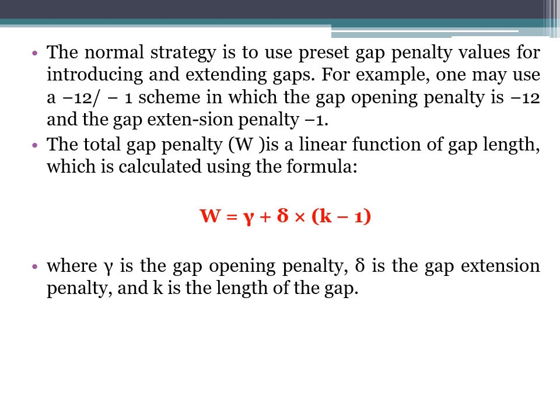The total gap penalty is a linear function of the gap length, calculated using the formula: w = γ + δ × (k − 1), where γ is the gap opening penalty, δ is the gap extension penalty, and k is the length of the gap. You find out how many nucleotides are missing, apply minus 12 for opening and minus 1 for each extension, and put those values into the formula to get the total gap penalty. This total gap penalty is then subtracted from the total alignment score to get the final alignment score.